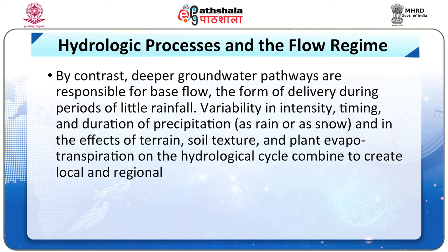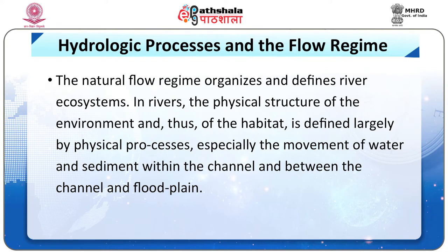Variability in intensity, timing, and duration of precipitation — either rain or snow — and the effect of terrain, soil texture, and plant evapotranspiration on the hydrological cycle combine to create local and regional flow patterns. The natural flow regime organizes and defines river ecosystems.